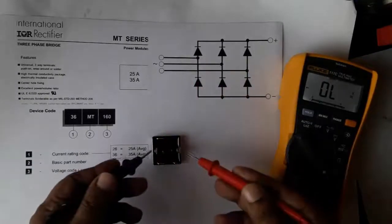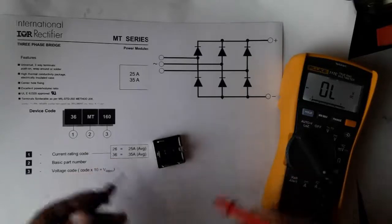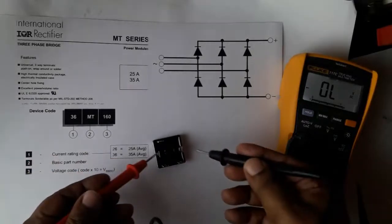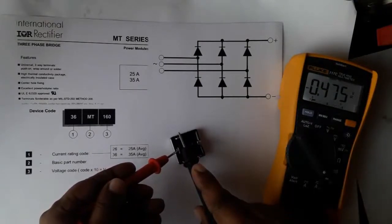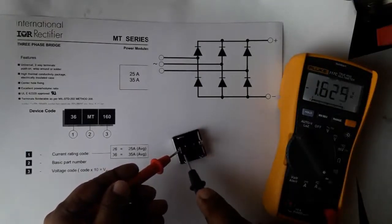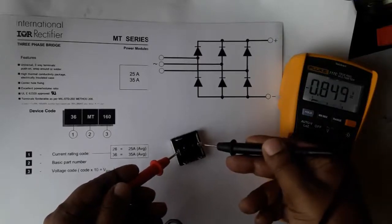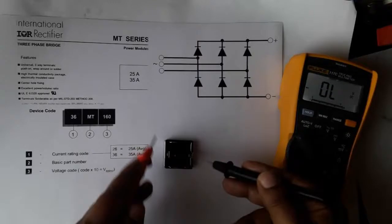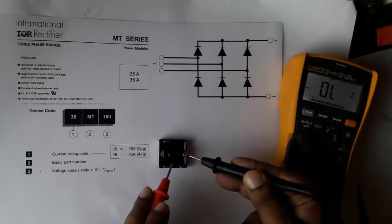Again, we're testing this rectifier by using black probe and red probe on the negative terminal and testing three phases. Now on the positive terminal, black probe testing three phases.